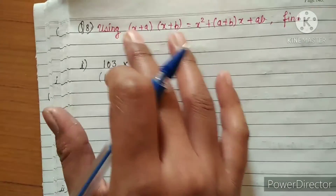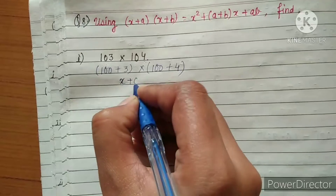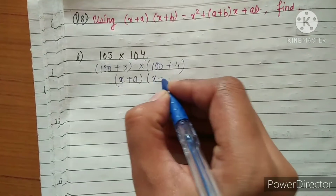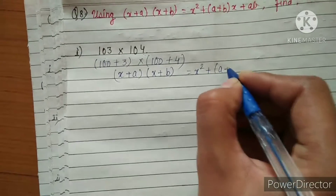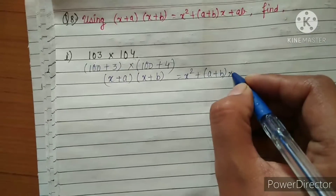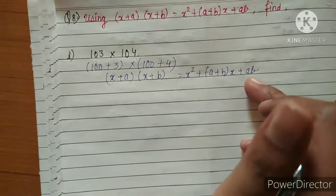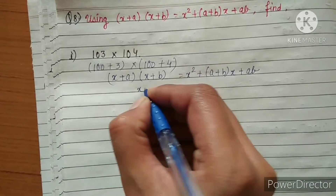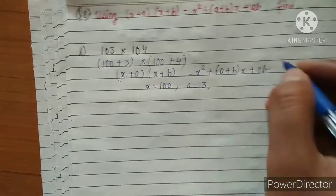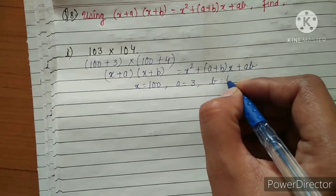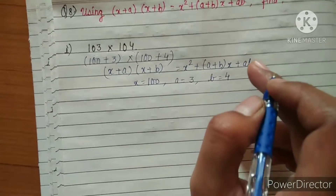Now it looks like the identity: x plus a multiplied by x plus b equals x squared plus a plus b times x plus ab. According to the identity, x is 100, a is 3, and b is 4. These three values we will put inside the identity.